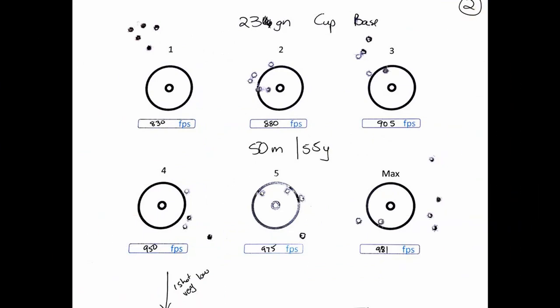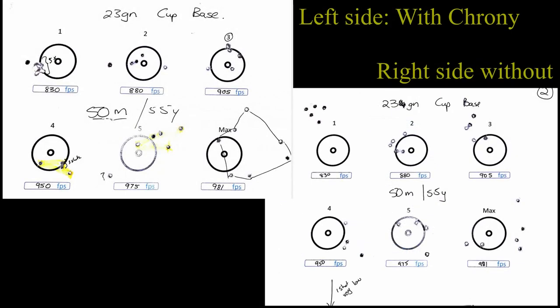The same observation pulled through without the chrony. The tightest group was again at the lowest speed, which is quite interesting. Also noticing that without the chrony at the highest speeds, the groups actually tightened a little bit, but this is still not the grouping I would like to see from these slugs.